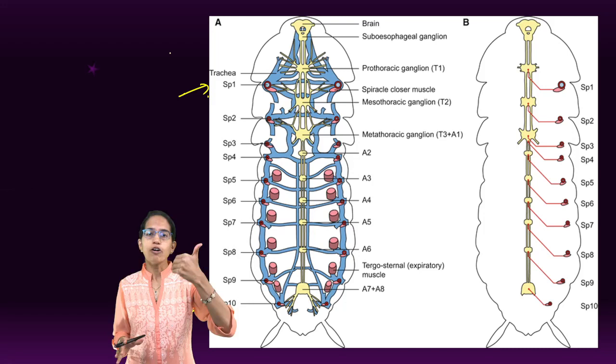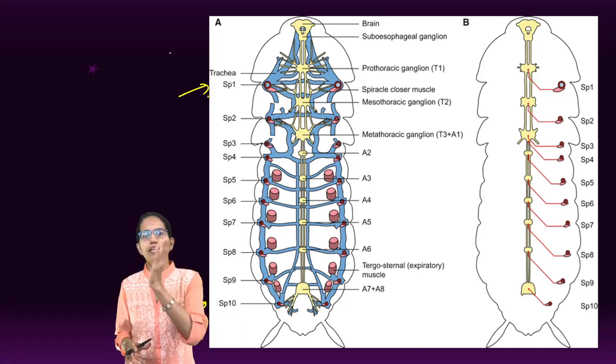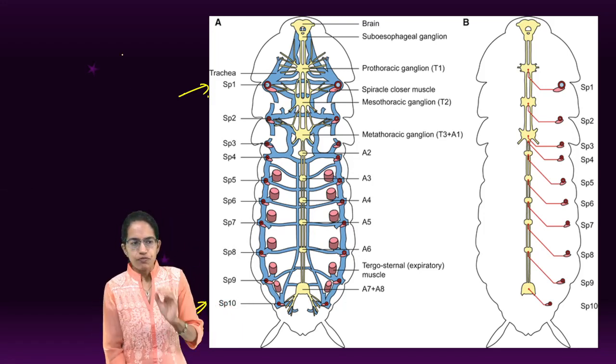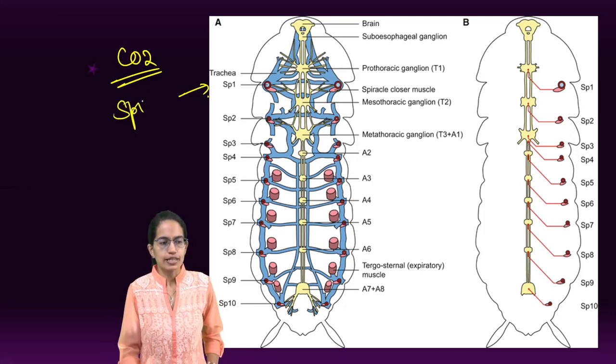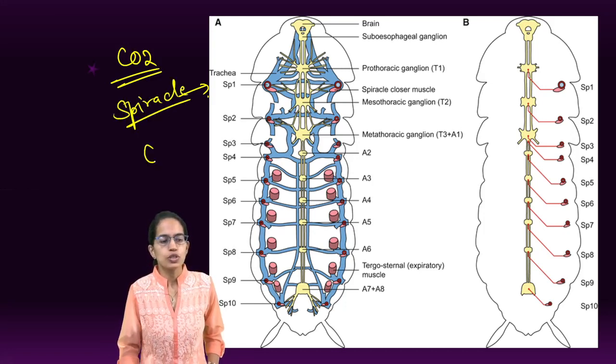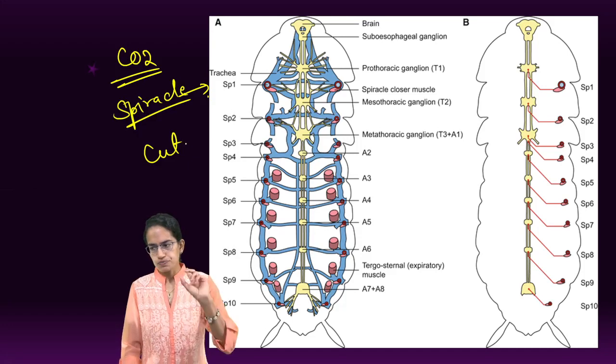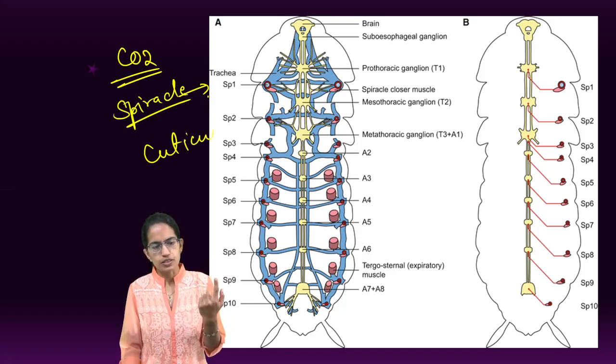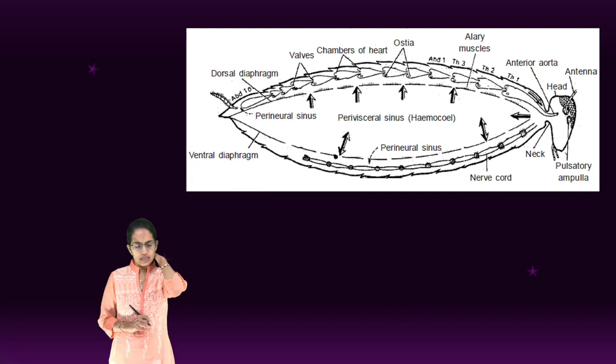Tracheal tubes carry the oxygen from the air supplied to the various parts of the body. Very little carbon dioxide is passed through the spiracles. Most of it goes through the cutaneous or the cuticular openings.